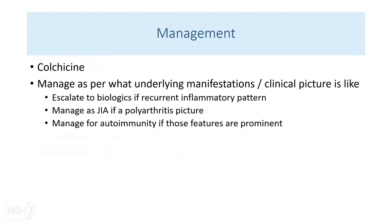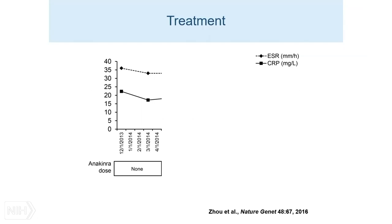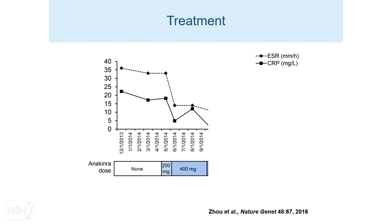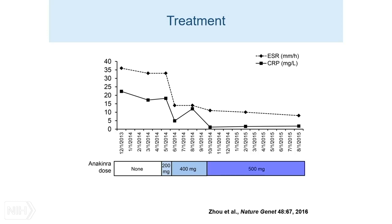There is not much to say about management. Patients on the mild end of the spectrum seem to do okay with colchicine; otherwise, escalate treatment early to avoid severe corticosteroid toxicity. Manage the most important manifestation — if it's arthritis, treat as polyarticular JIA; if autoimmune disease, manage like a lupus patient — and escalate to biologics for other features. One patient from the initial cohort on prednisone and azathioprine with inadequate control was started on 200 mg of anakinra, escalated to 400 mg and then 500 mg, with the acute phase reactants coming down and the patient remaining stable with normalization of ESR and CRP.